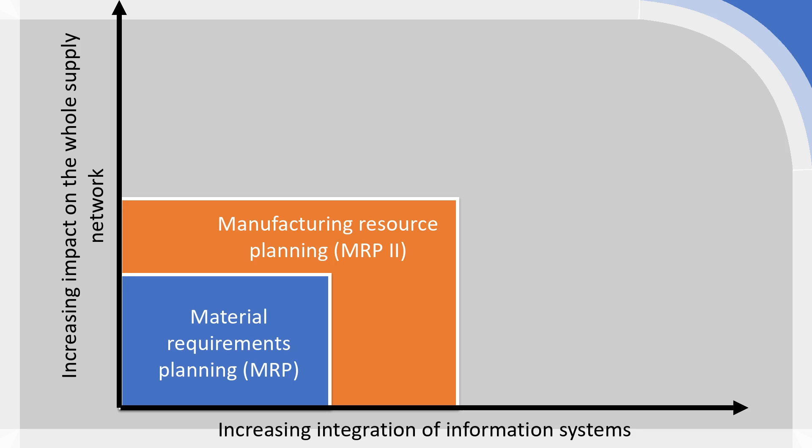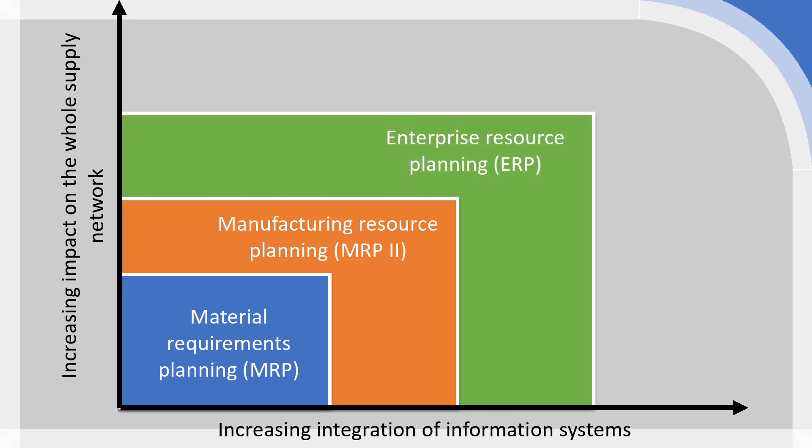If we move to the third element, which is traditionally called ERP — enterprise resource planning — we'll be bringing in other elements outside of just our manufacturing resources. So this can be order tracking. We can integrate downstream-facing systems: order tracking, logistics, and other systems there. That would really round out our integration of various business systems and data from various parts of our organization.